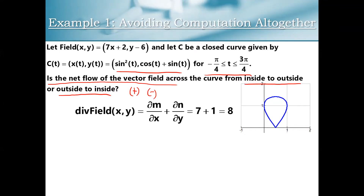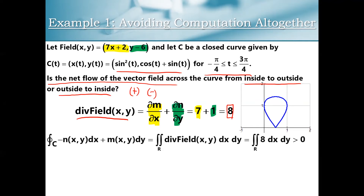The problem is asking: is the net flow across from inside to outside or outside to inside? When you compute the divergence of this vector field, something interesting becomes apparent. Our M is 7x plus 2, so dM/dx is 7. Then dN/dy, the derivative of y minus 6 with respect to y, is 1. So 7 plus 1 equals 8 — this divergence is constant everywhere. Every single point in space is a source, and watch how we can use the Gauss-Green formula to produce a result without actually having to perform any integration.